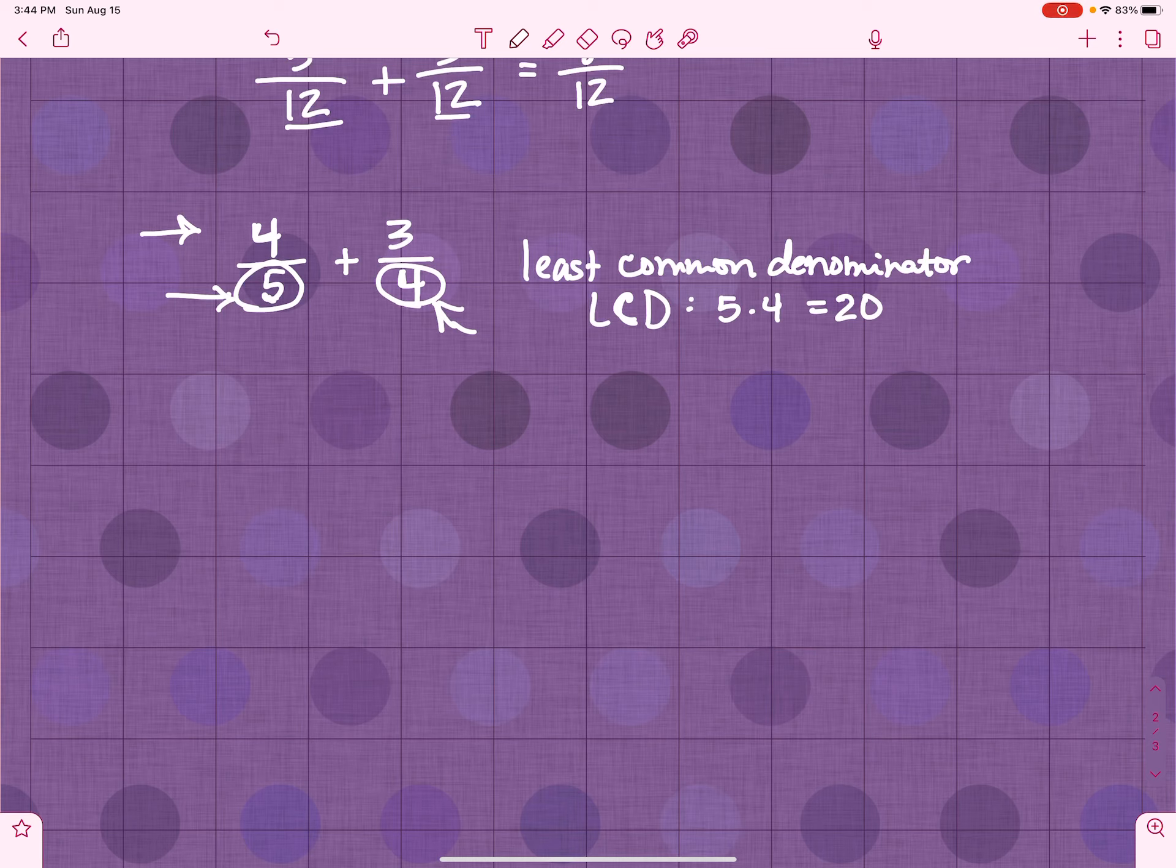Well, we have to take 4 fifths, and we have to multiply it by something. Now this is where things get tricky with adding and subtracting fractions. Because a lot of students just want to multiply the denominator by 4 to give us 20. Well, we can't do that.